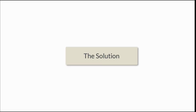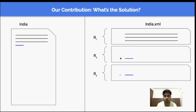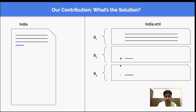So what's the solution? One way to solve this problem is to just store the difference rather than storing the whole revision. For example, rather than storing the whole revision number two, we just store the difference between revision number two and revision number one. Similarly, rather than storing revision number three, we just store the difference between revision number three and revision number two, and so on.